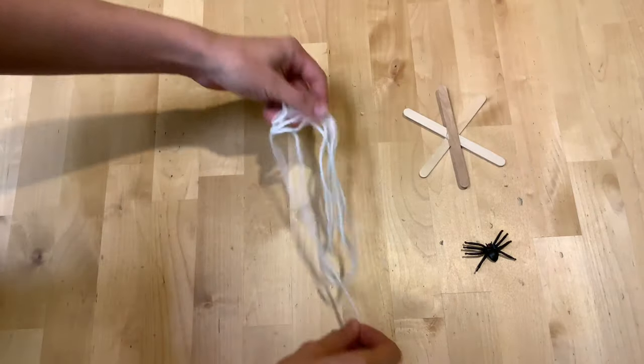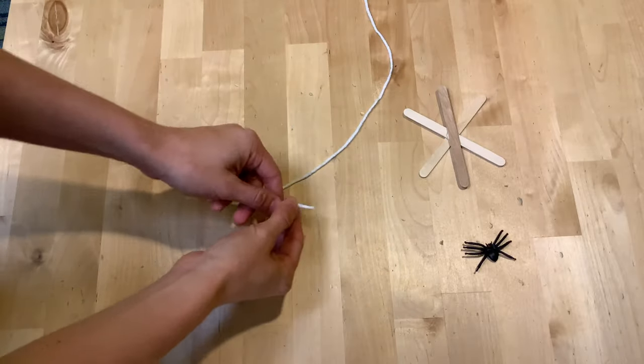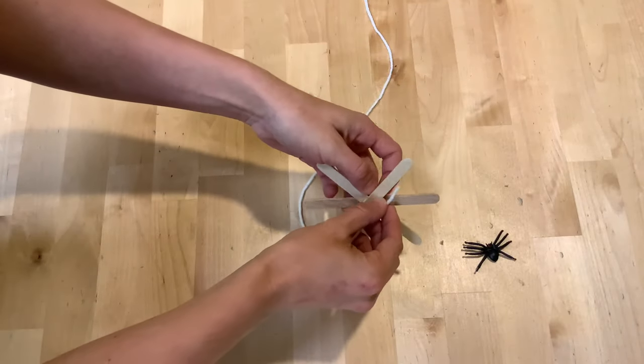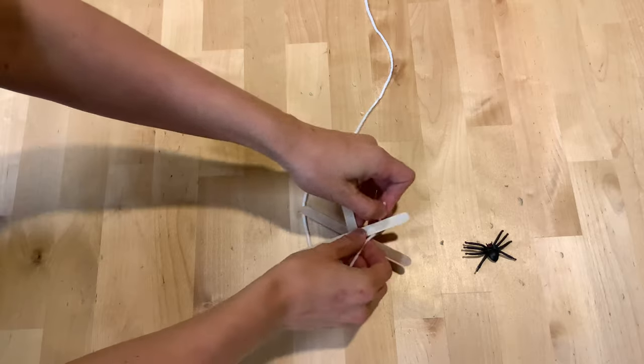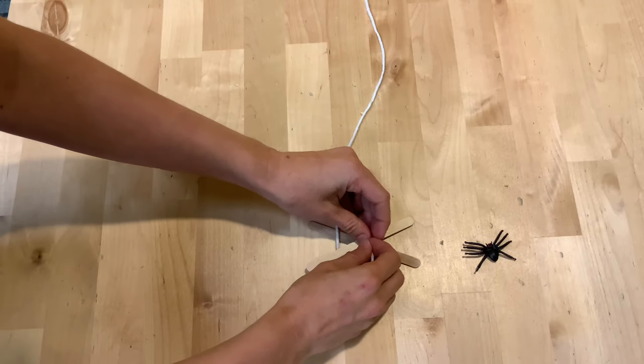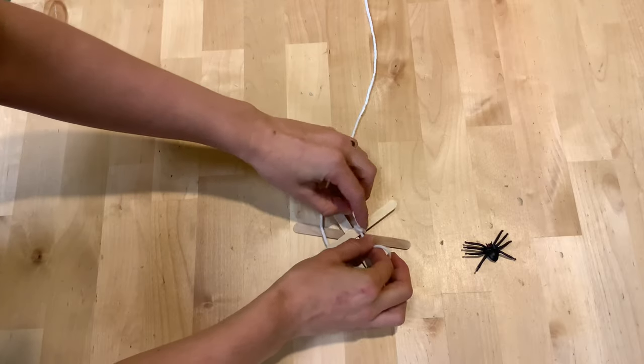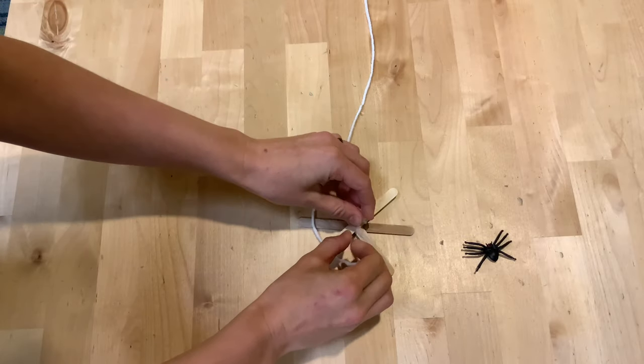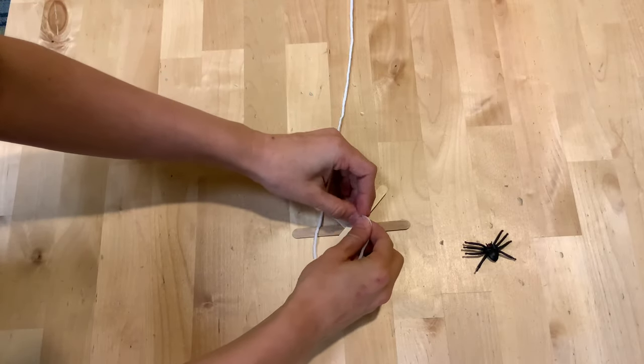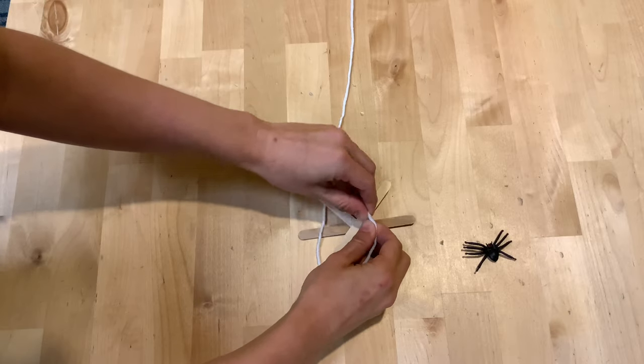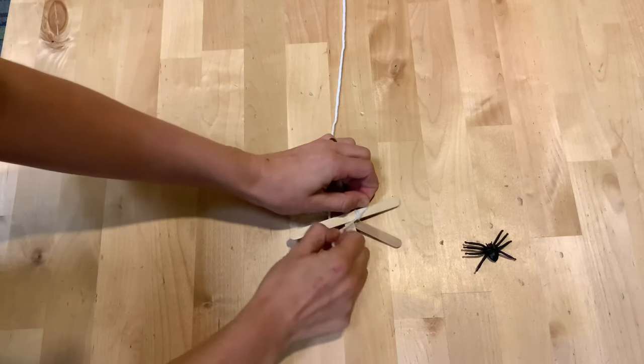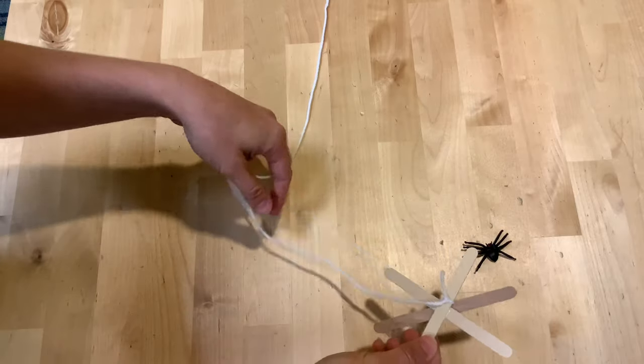Our first step is to take one end of your long piece of string and tie it to one of the ends of your star. We're going to tie it towards the center. So just a quick double knot will do. So now we have our string attached to our star.